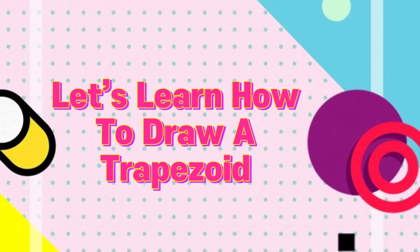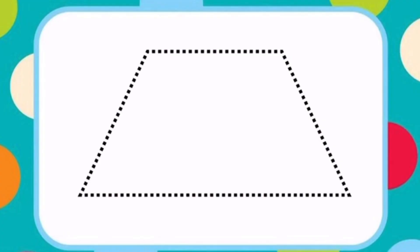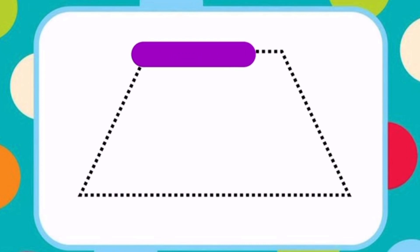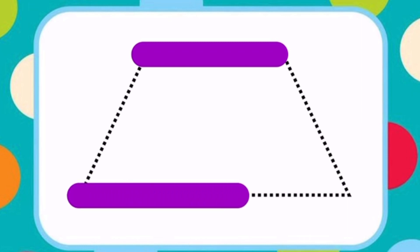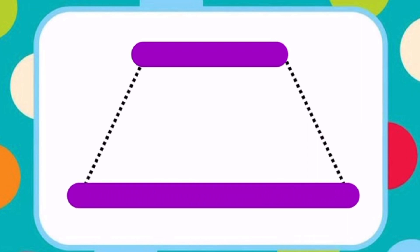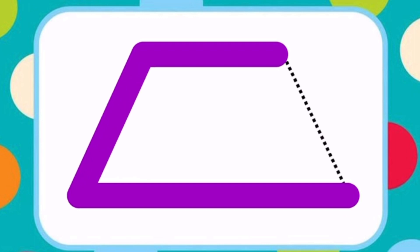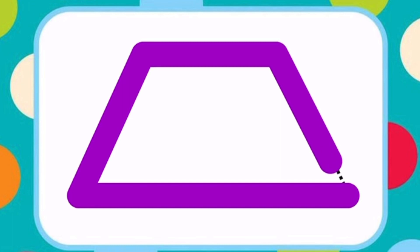Let's learn how to draw a trapezoid. First draw a sleeping line starting from a point. Then draw another sleeping line parallel to the first sleeping line. Now draw two slanting lines joining the starting points and end points of both the sleeping lines respectively. This is how you draw a trapezoid.